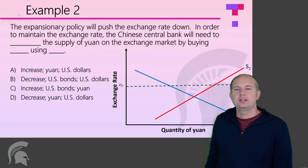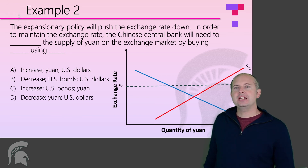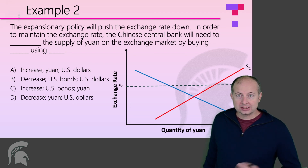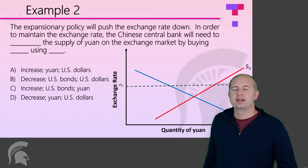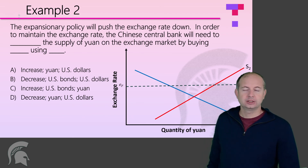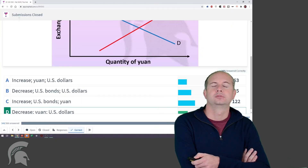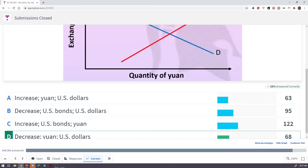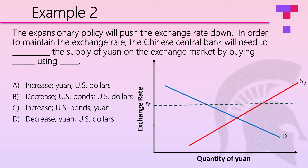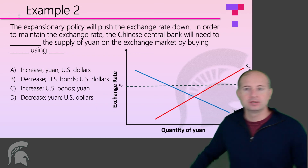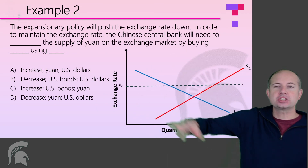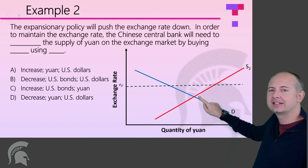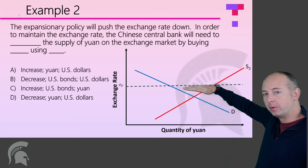The expansionary monetary policy will push the exchange rate down. In order to maintain the exchange rate, the Chinese central bank will need to adjust the supply of yuan on the exchange market. The answer here is D. The expansionary policy pushes the exchange rate down — supply and demand intersect at an exchange rate below where we want it to be.